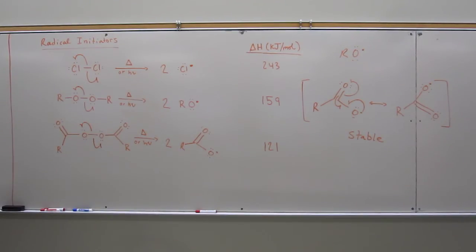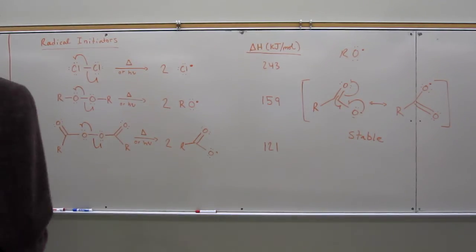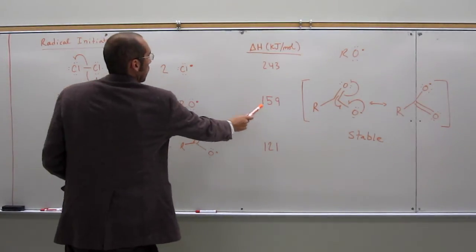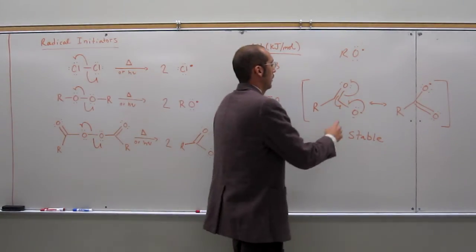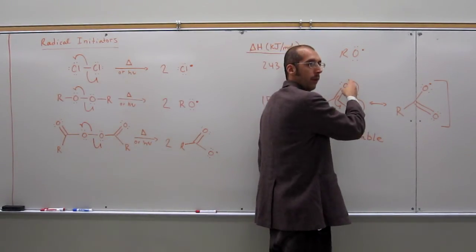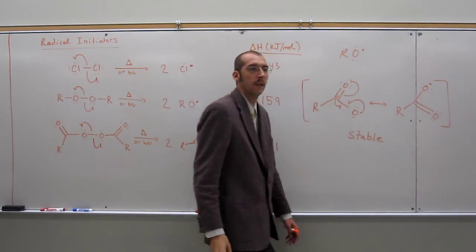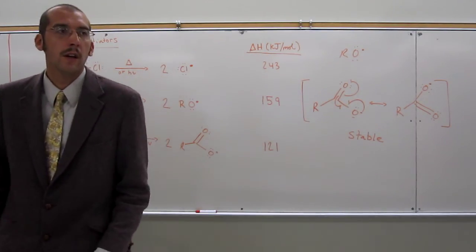You can initiate these, usually, with either heat or light. It'll give them enough energy. Isn't that still the same? It's two resonance structures, right? That radical, that electron, that electron is on both of those things, okay? So, it's got a partial character on both of them.